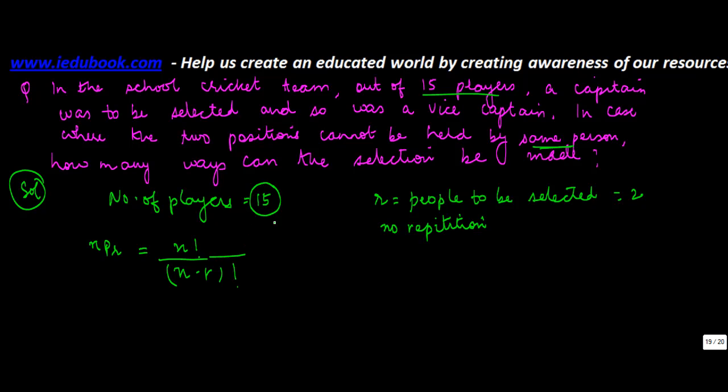Now, here the number of players are 15. So you can also write this as factorial 15 upon... How many selections are to be made? 2. So r is equal to 2, or 15 minus 2. This gives you factorial 15 upon factorial 13.